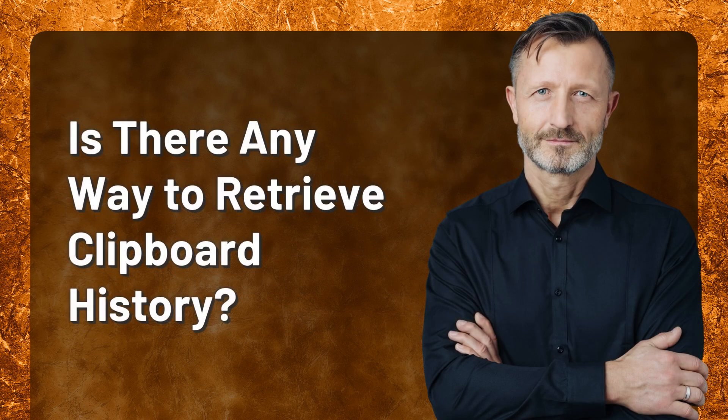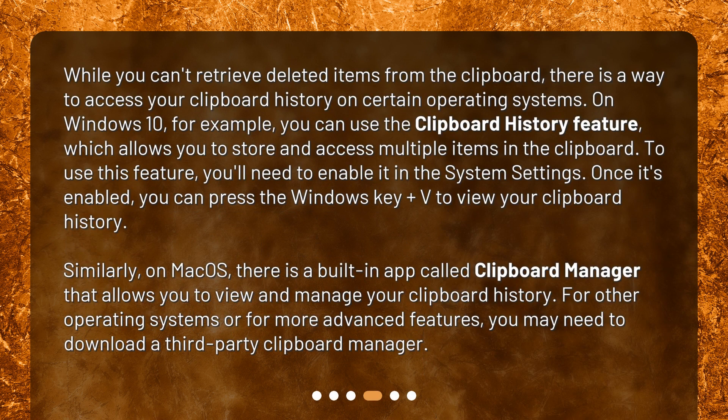Is there any way to retrieve clipboard history? While you can't retrieve deleted items from the clipboard, there is a way to access your clipboard history on certain operating systems. On Windows 10, for example, you can use the clipboard history feature, which allows you to store and access multiple items in the clipboard. To use this feature, you'll need to enable it in the system settings. Once it's enabled, you can press the Windows key plus V to view your clipboard history. Similarly, on macOS, there is a built-in app called Clipboard Manager that allows you to view and manage your clipboard history. For other operating systems or for more advanced features, you may need to download a third-party clipboard manager.